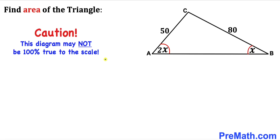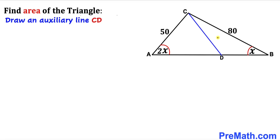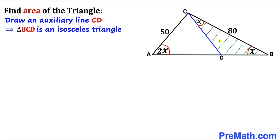Note that this figure may not be 100% true to scale. We can see that this angle is x whereas this angle is 2 times x. We are going to draw auxiliary line CD such that angle BCD is x. Therefore triangle BCD is an isosceles triangle since these two angles are congruent, so side length BD is equal to side length CD.